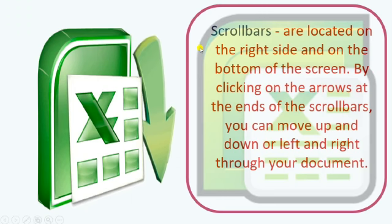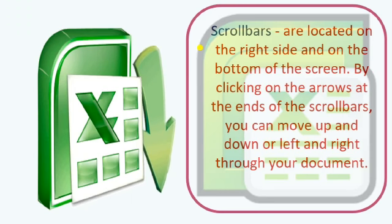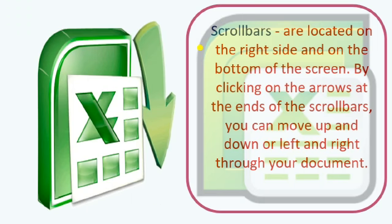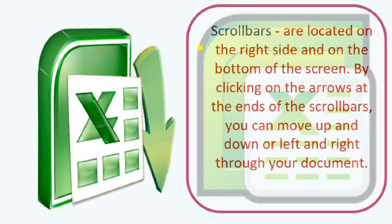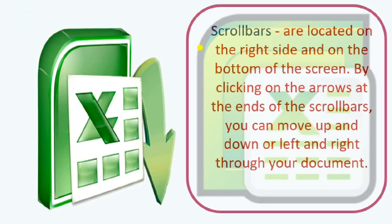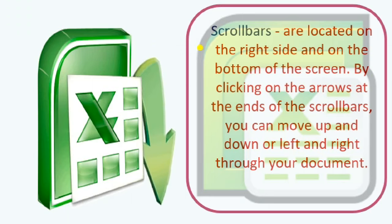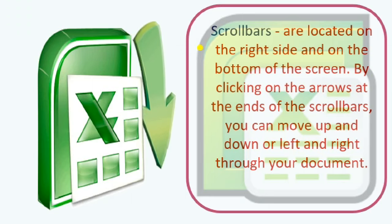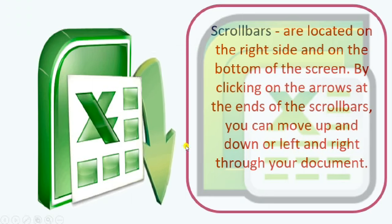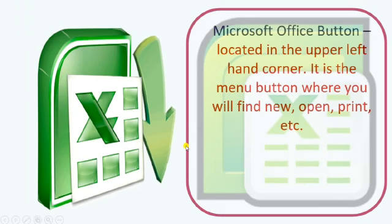Now, Scroll Bars — they are located on the right side and bottom of the screen. Above the zoom tool, you can see the scroll bar. By clicking on the arrows at the end of the scroll bar, you can move up and down or left and right through your document. If you want to move anywhere in your MS Excel document, you can use these scroll bars.